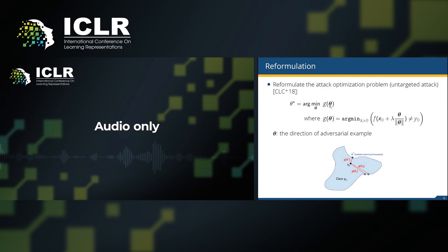By minimizing g of theta, we can find a shortest distance from the original point to the decision boundary, thus finding the optimal adversarial examples.